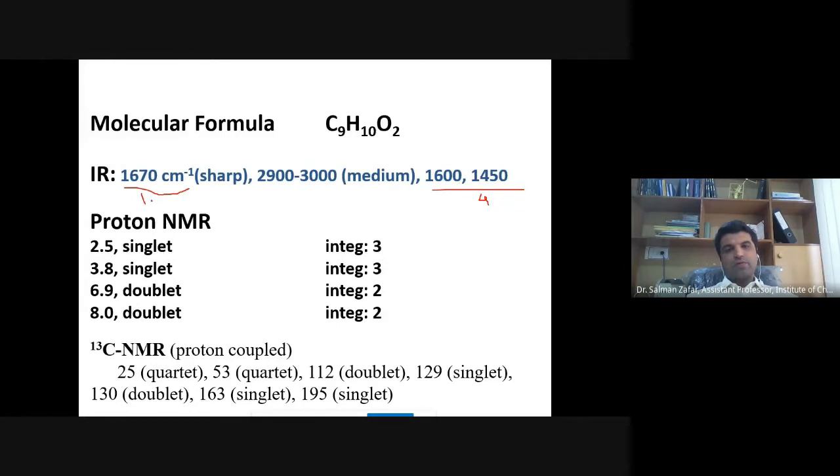Then we have the proton NMR, so solve it peak by peak. We have three proton singlet at 2.5. CH3 attached to carbonyl. So we have a singlet, three protons at 2.5, and that you have proposed is a CH3 next to a carbonyl.